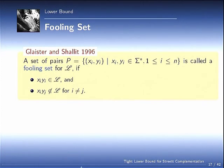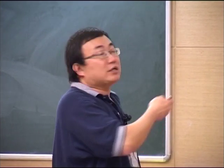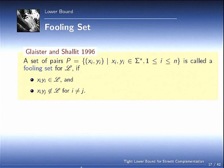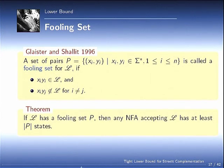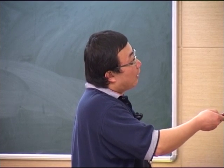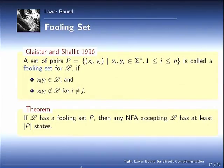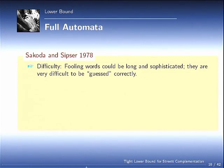So, let's first talk about something called a fooling set. This is just one type of definition. A set of pairs is called a fooling set. Here, this fooling set is still defined on words. Basically, if i not equal to j, then xi, yj does not belong to L. If the index is the same, when these two words join together, then the final word belongs to L. The theorem says, if a language has a fooling set of a certain size, then any NFA that recognizes L should have at least that number of states. That's why we can get a lower bound.